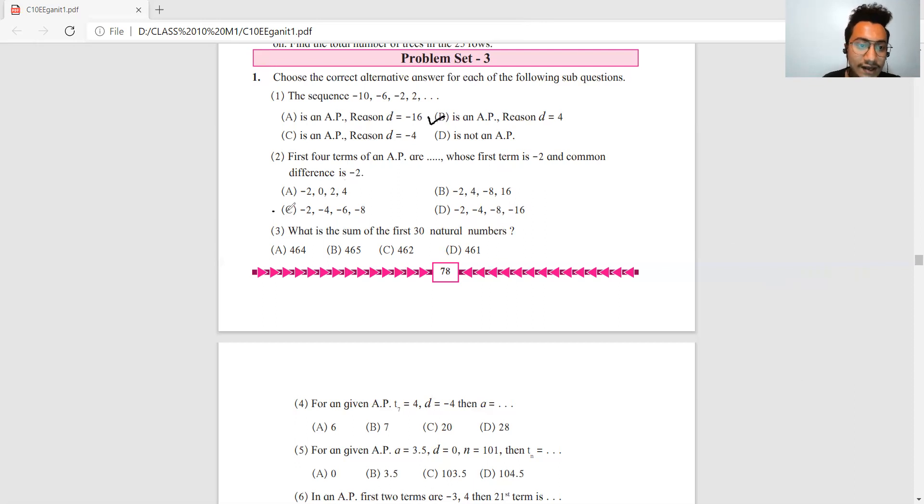Now third question: what is the sum of the first 30 natural numbers? Very simple.